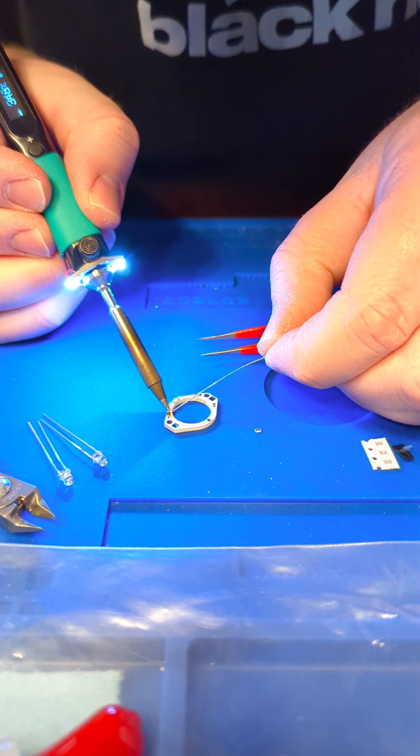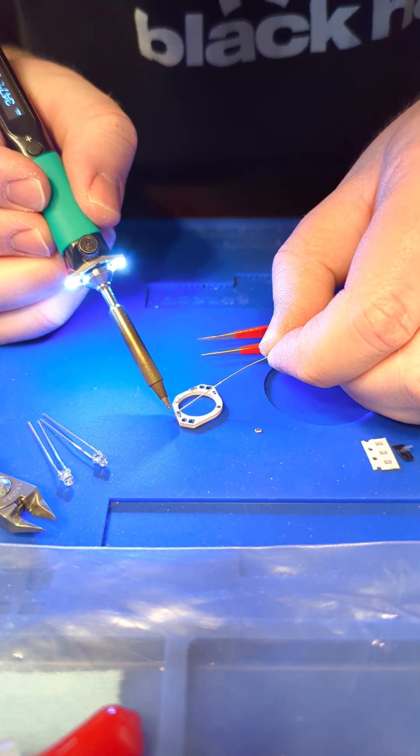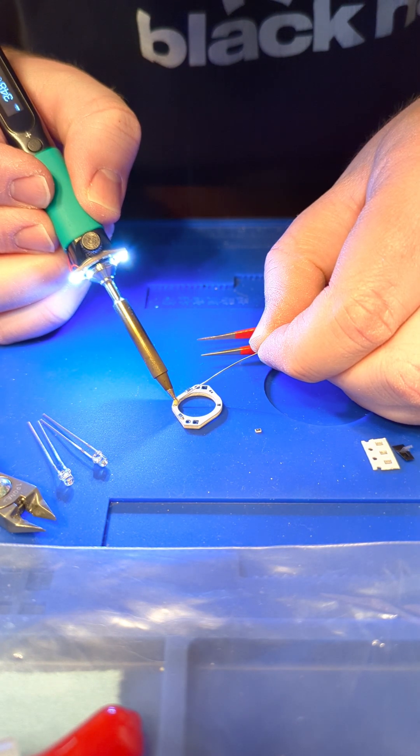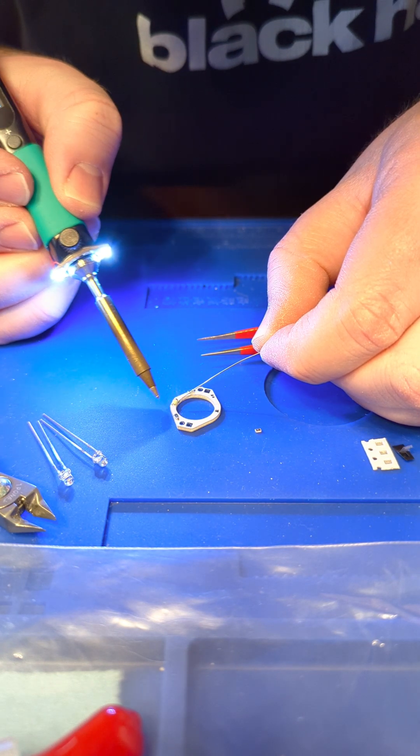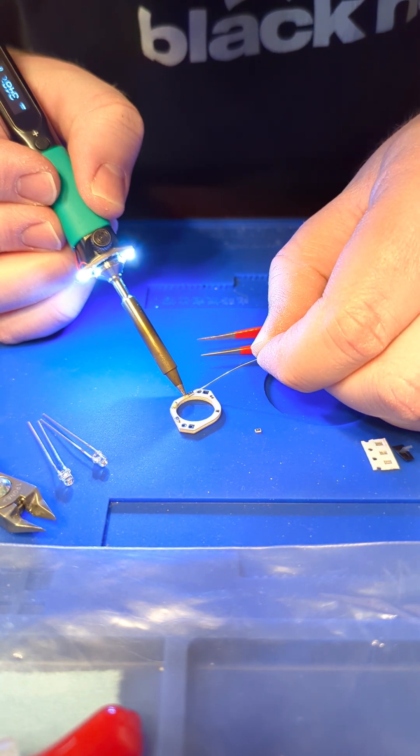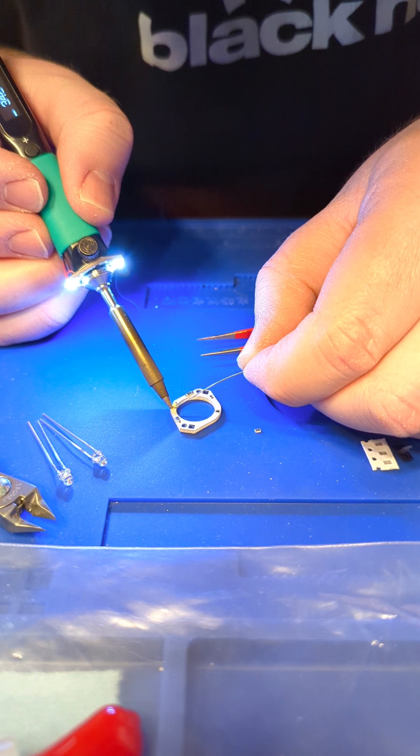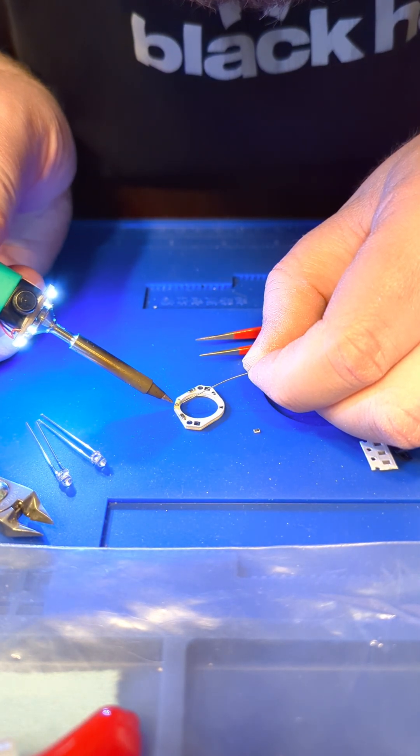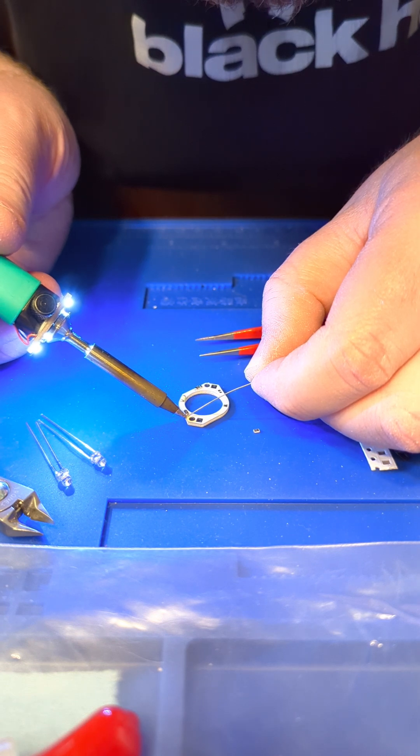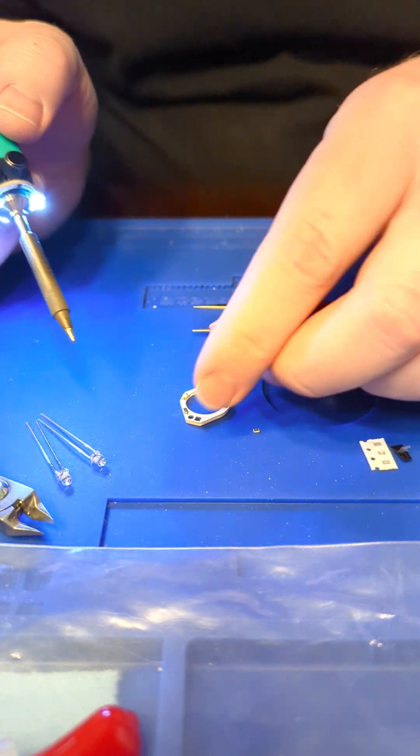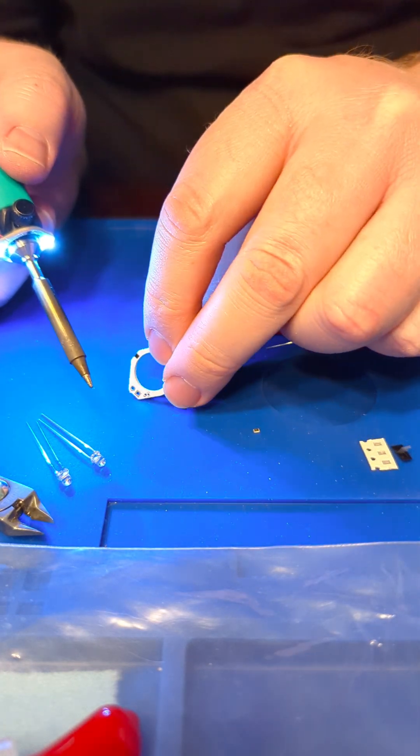Once those are on tacked, then you can go on to the other side and solder them all in place. And if there wasn't enough solder on the other side, you can add a little bit while you're at it.